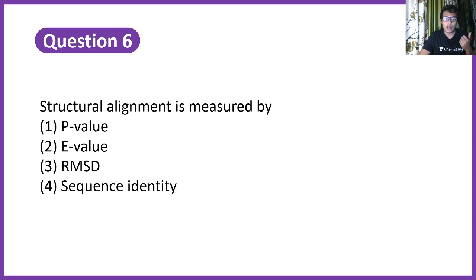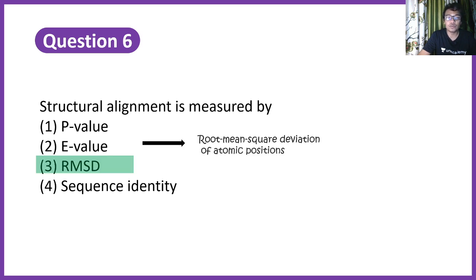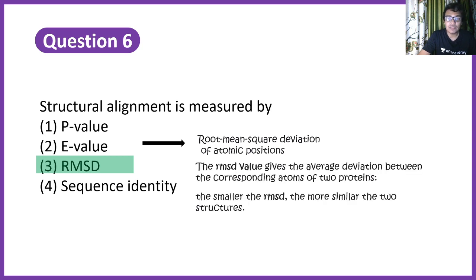They have given P value, E value, RMSD, and then sequence identity. Correct answer would be RMSD which is root mean squared deviation of atomic position. This kind of tells you the average deviation of a particular atom between two atoms, what is the deviation from a particular conformation. So the smaller the RMSD, greater would be the structural level match.